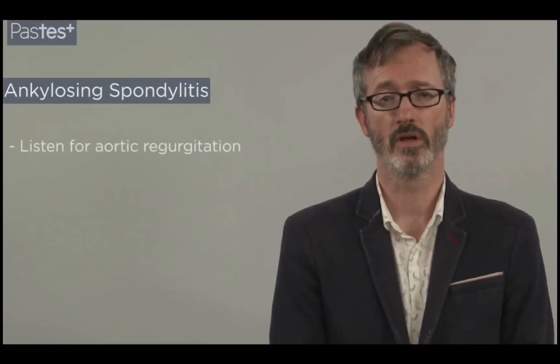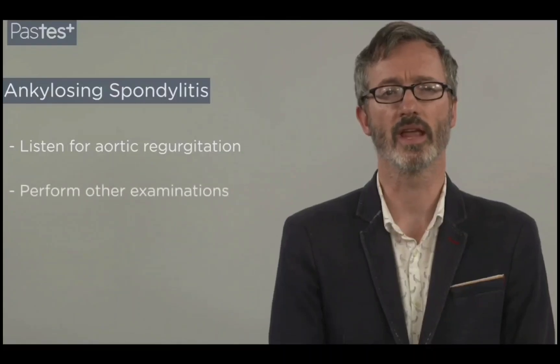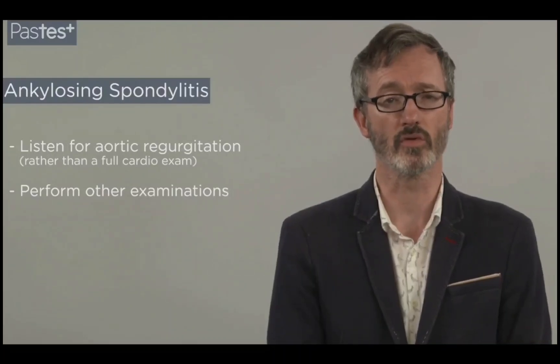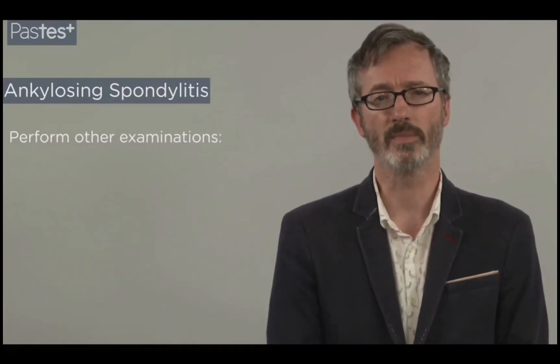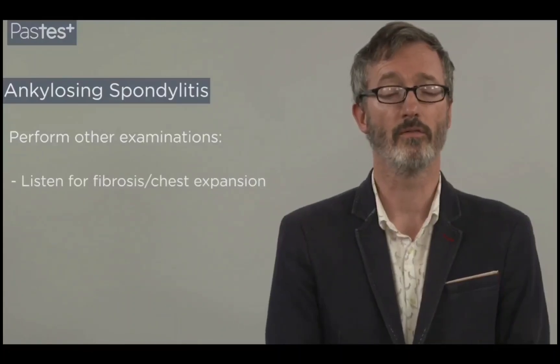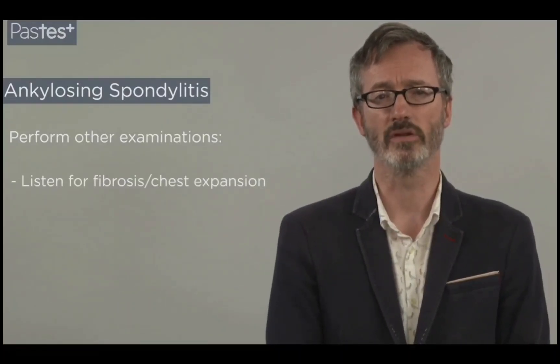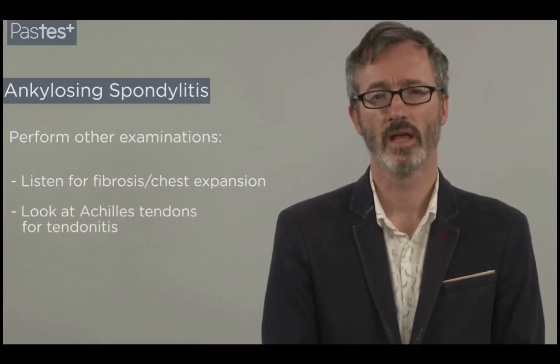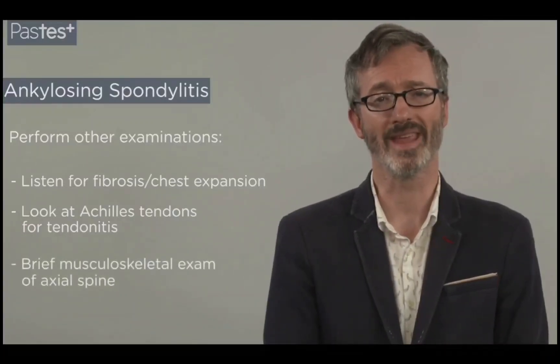For example, in a patient with ankylosing spondylitis, it is more appropriate in this station to listen for aortic regurgitation together with the other focused areas of the cardiology exam, rather than a complete examination lying the patient on the left and listening for mitral stenosis. This is because you will be expected also to listen to the lungs for pulmonary fibrosis and perhaps the chest expansion together with looking at the Achilles tendons for evidence of tendonitis. It may also be appropriate to do a brief musculoskeletal examination of the axial spine. It quickly becomes obvious that there will not be enough time to perform the complete individual system examinations that are required.